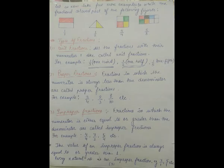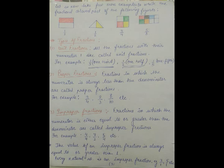Let us now take a few more examples to write the fractional colored part of the following figures. As you can see the first figure, it is a rectangle with two equal parts and one part is shaded, so the fraction representing the shaded part is one by two. Similarly, in the next triangle the shaded part is also one by two. Now, if we divide a square into four equal parts and three parts are shaded, the fraction representing the shaded part is three by four.